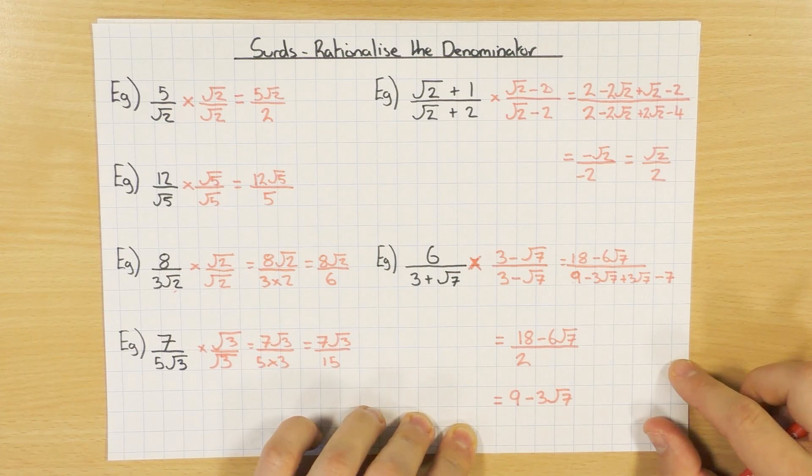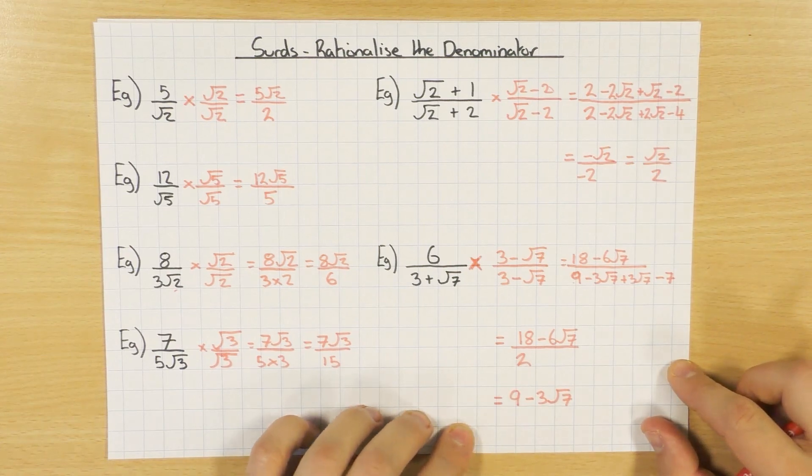So the answer there would be 9 minus 3 root 7. So that's the basics of rationalizing the denominator. Hopefully that helps. Cheers guys.